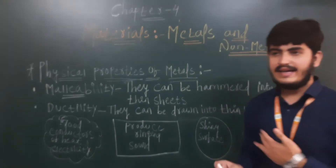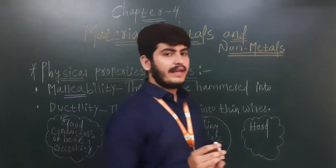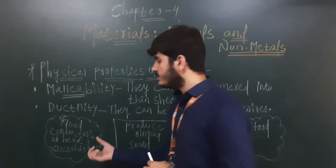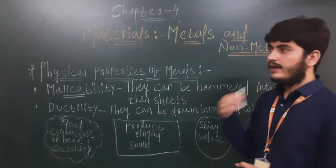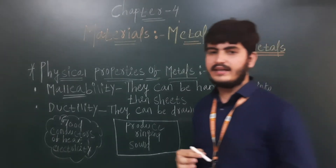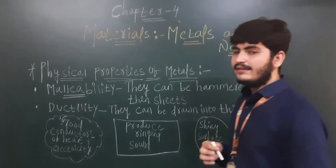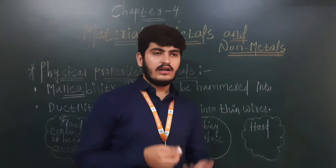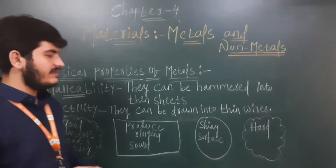The third physical property is that metals are good conductors of heat and electricity. They also produce a ringing sound when struck. Metals have a shiny surface, and they are very hard. So these are the six physical properties of metals.